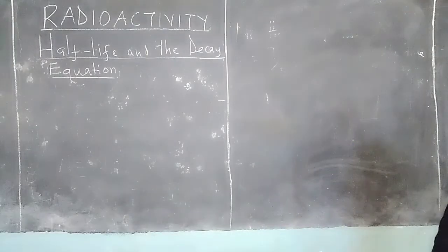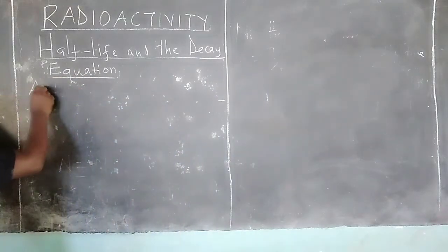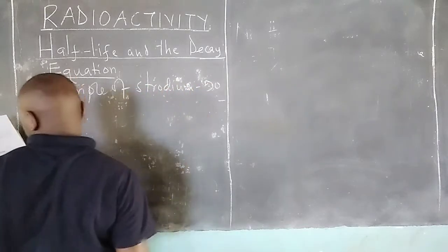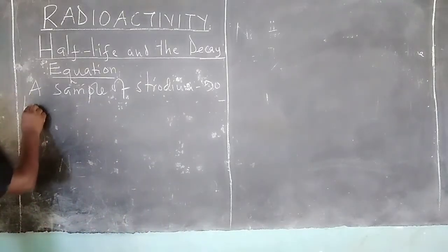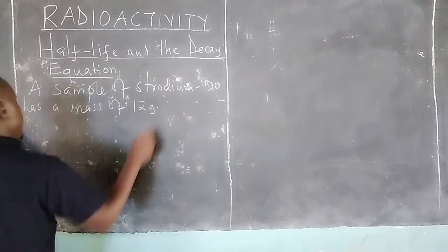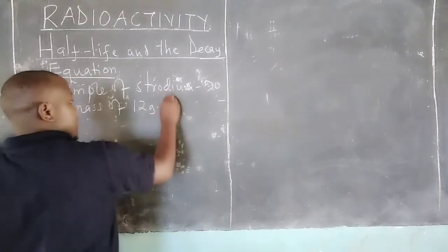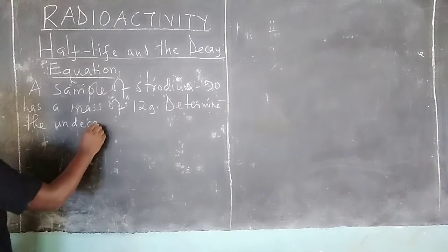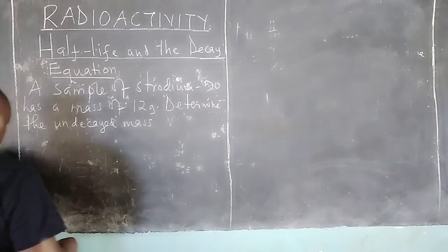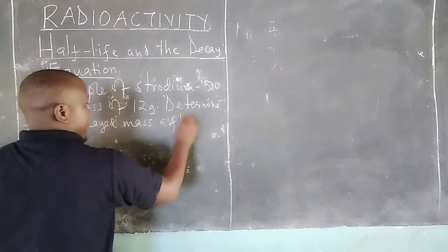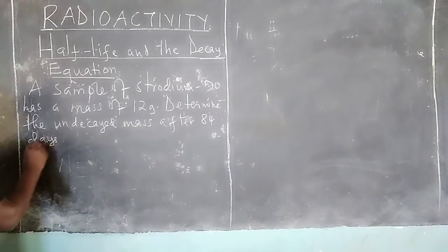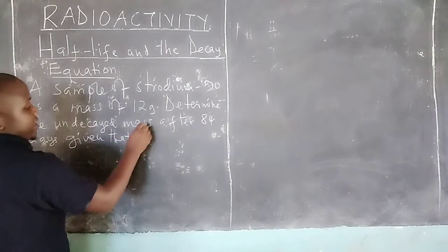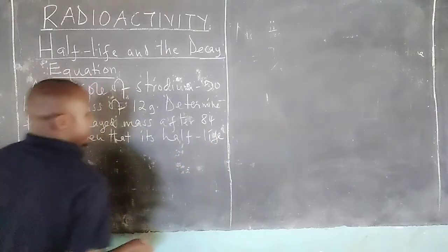We are given an example: A sample of strontium-19 has a mass of 12 grams. Determine the decayed mass after 84 days, given that its half-life is 28 days.